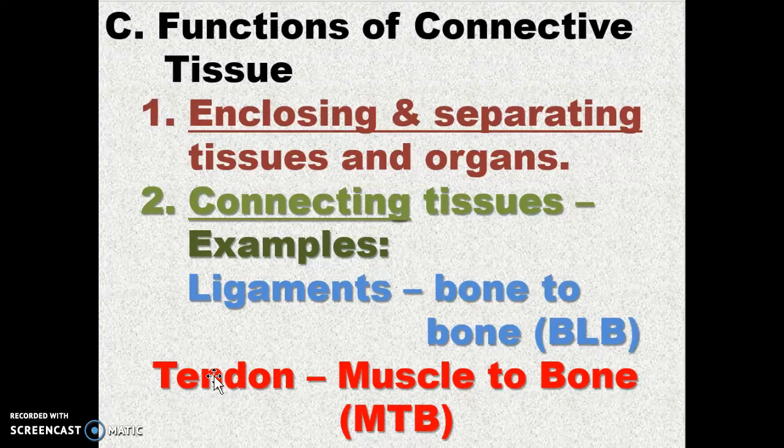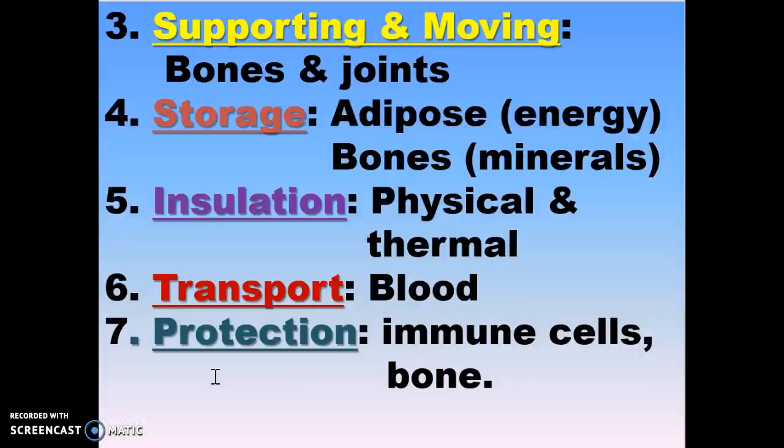Functions of the connective tissue: they enclose and separate organs; they connect tissues — ligaments go bone to bone, tendons go muscle to bone; they support movement for bones and joints; they store — adipose stores energy as fat, and bones store minerals; they insulate; they transport, as in blood; and they protect through immune cells and bone. These are all connective tissue. This brings us to the end of part one, tissues.